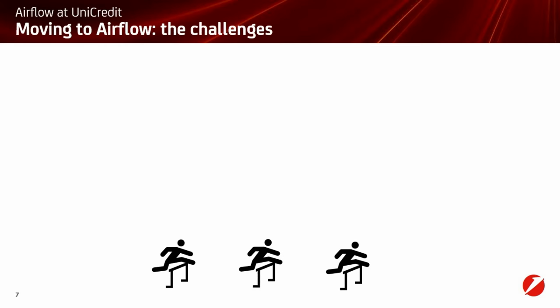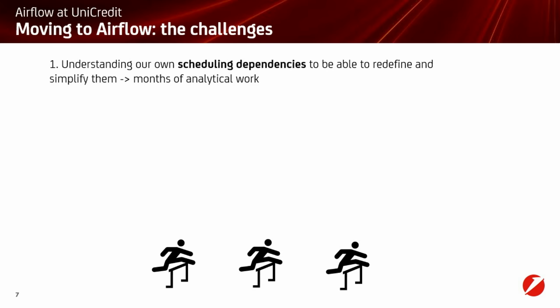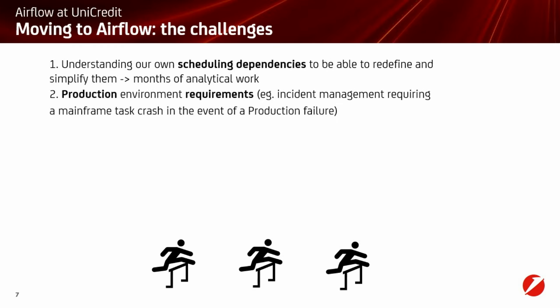Now the challenges — difficulties we met during our migrations. First of all, we needed to deeply understand how the original process worked. Some of the dependencies were fake, used to balance environmental resources; others needed to remain because the process required them. Taking into account the scope of around 8,000 tasks, this required several months of analytical work. Another challenge was fitting Airflow into existing processes such as incident management resulting from company policy — specifically, if a single task fails, an incident must be created by an external system.